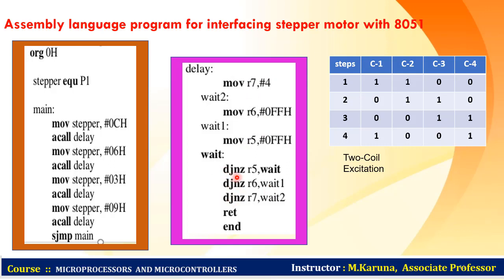After sending each sequence, the controller needs to wait for some time, so a delay program is provided. In the delay program, R7 is set to 4, R6 is set to 0FFH, and R5 is set to 0FFH. R5 is decremented by 1 each clock cycle — if R5 is not zero, the controller jumps back to wait. Once R5 equals zero, R6 is decremented by 1 until R6 equals zero, then R7 is decremented. This loop continues until R7 equals zero, providing the full delay.